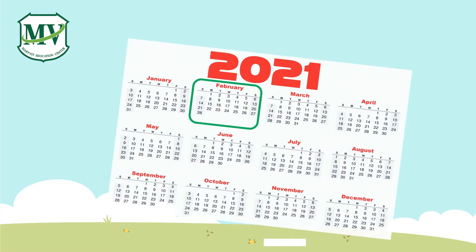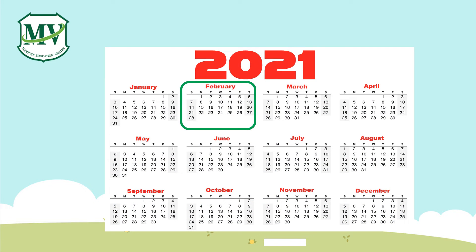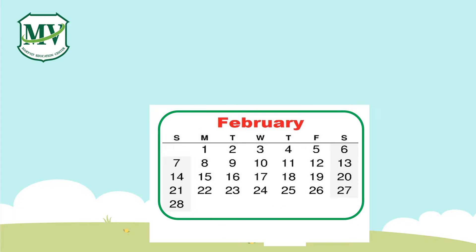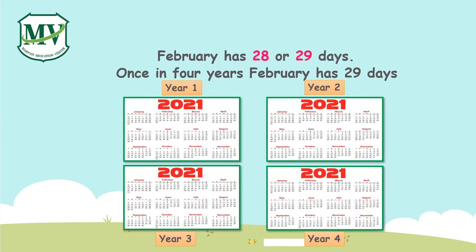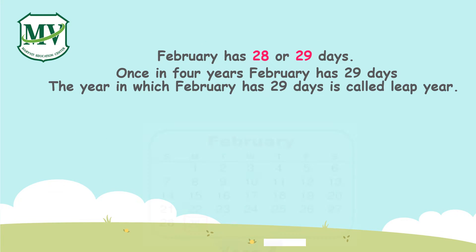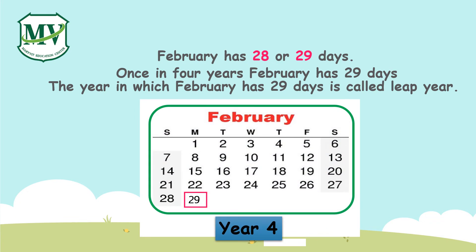And lastly, we have February, which is a special month. Because February has 28 or 29 days. Once in 4 years, February has 29 days. The year in which February has 29 days is called the leap year.